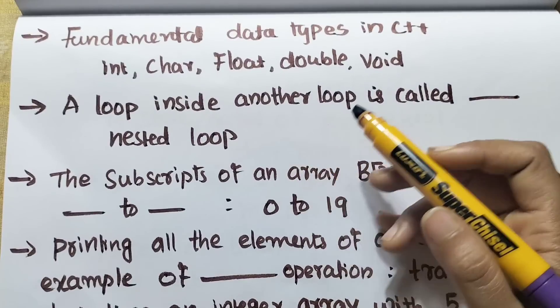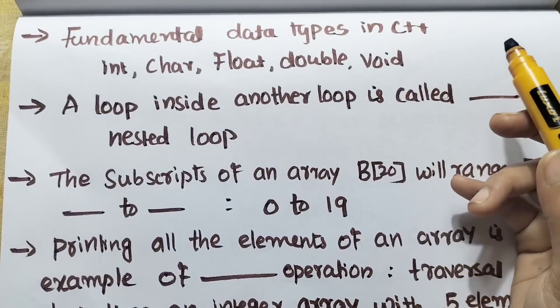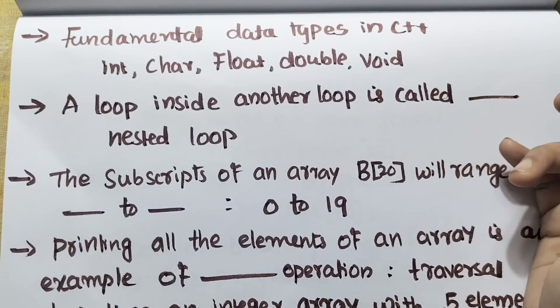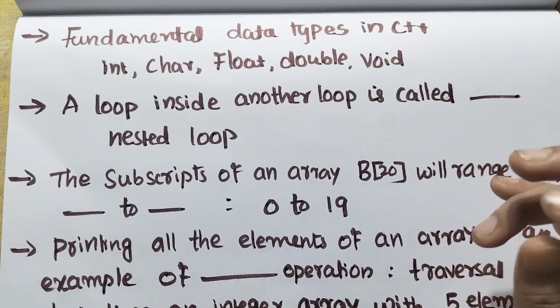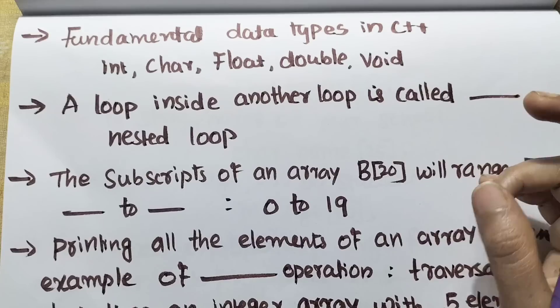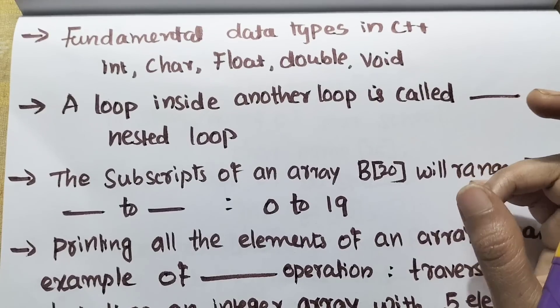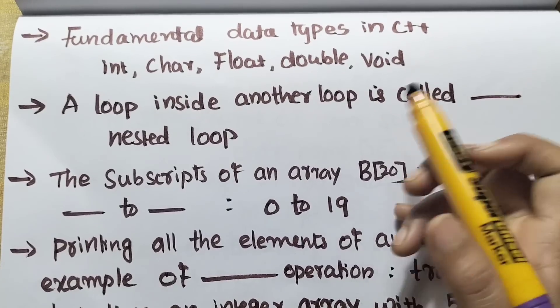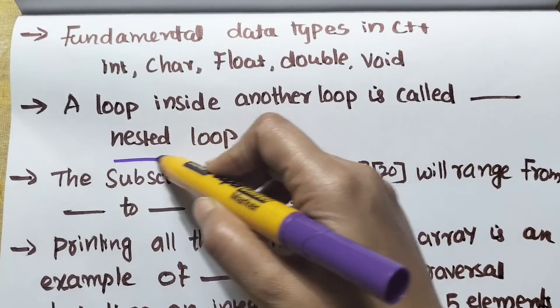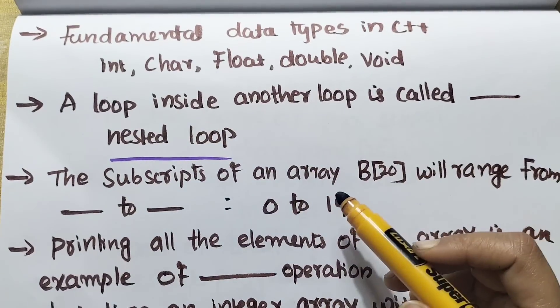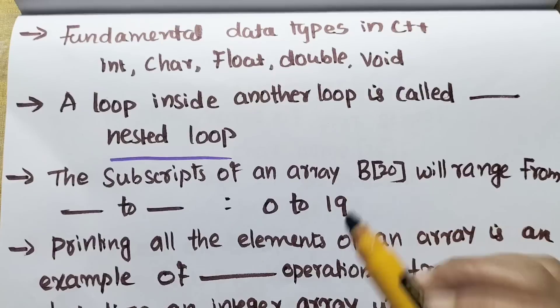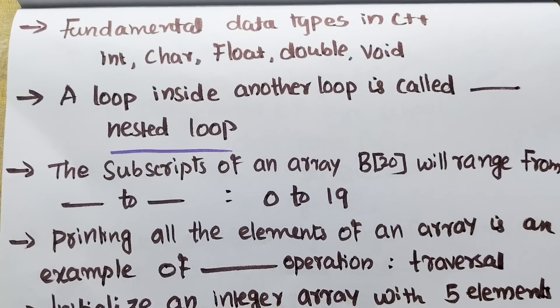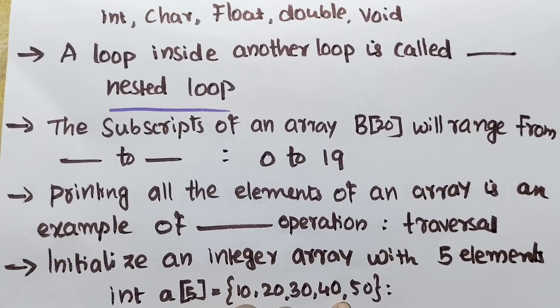A loop inside another loop is called a nested loop. What is a nested loop? A loop inside another loop is called a nested loop.